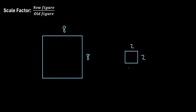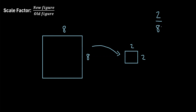Let's try one more example. We have a large square and a small square, and we're told they're similar figures. This time we want to go from the large square to the small square. The large square is the old figure and the small square is the new figure. We pick a side of the new figure — it has a length of 2. So 2 divided by the corresponding side in the old figure, which has a length of 8. That reduces to 1/4. The scale factor is 1/4. Since we're going from a large figure to a smaller figure, the scale factor should be less than 1, and 1/4 is indeed less than 1.